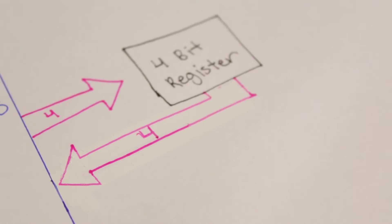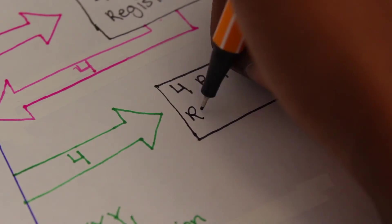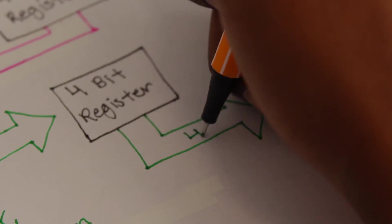The second group, the Y values or the instruction, come from the bus and go into a register. This register outputs to another module we'll talk about later called the instruction decoder.